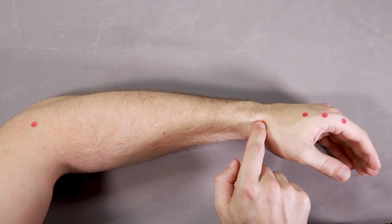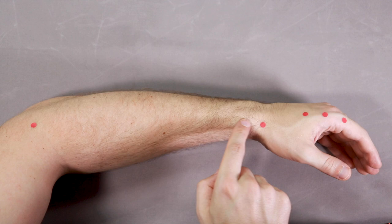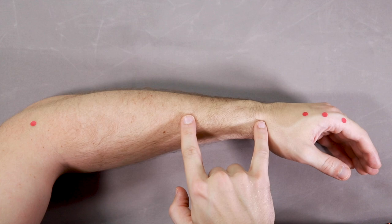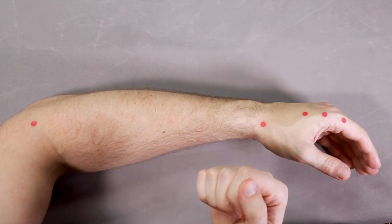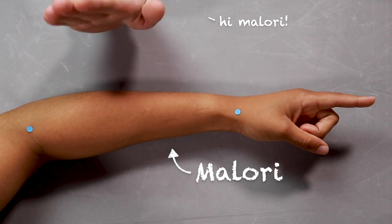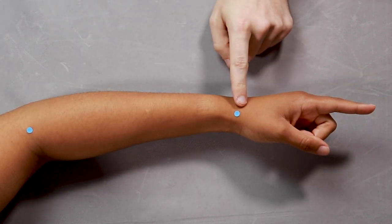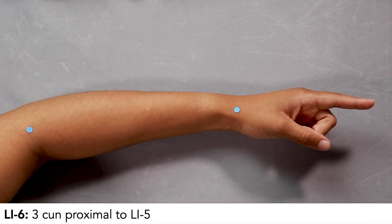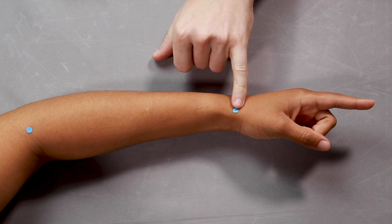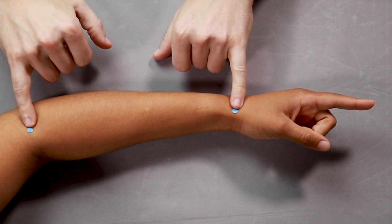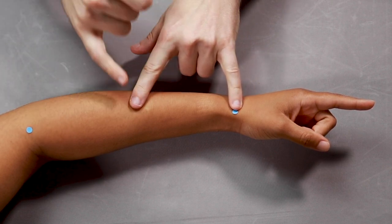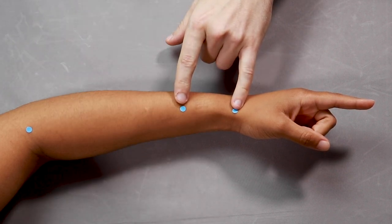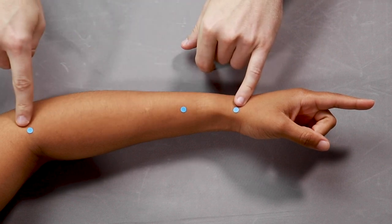Now we have Large Intestine 5 and Large Intestine 11, and all the other points are going to be on the line connecting the two. I'm not sure if I'm going to be able to measure these points by myself with one hand, so let's see if I can find a partner to help me out. Here's LI5, here's LI11, and this gives us our line for the large intestine channel. LI6 is 3 cun up from LI5. LI5 to LI11 is 12 cun. Half of 12 is 6. Here's 6 cun. Half of 6 is 3. That gives us 3 cun for LI6 on the line from LI5 to LI11.